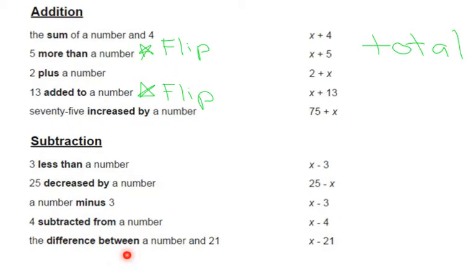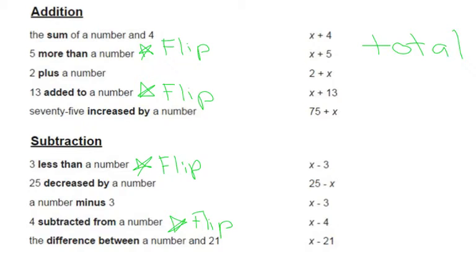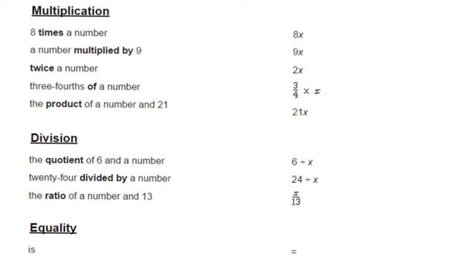The words that mean subtraction are: less than, decreased by, minus, subtracted from, and difference between. There are two you have to watch out for flips here also — 'less than' and 'subtracted from' also mean flips. For example, '3 less than x': the 3 is at the beginning of the phrase but at the end of the expression, and x is at the beginning of the expression.